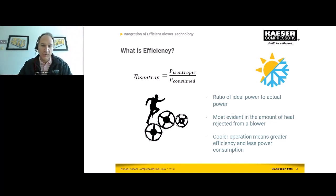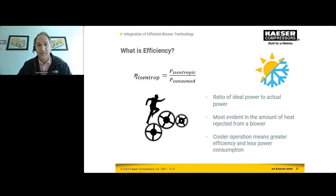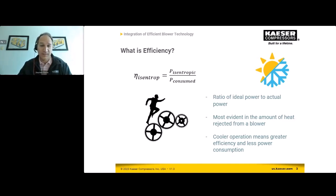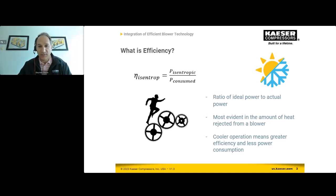A way to bring that home is that inefficiency shows up in heat and the amount of heat being rejected from a blower. A more efficient blower means it runs much cooler. This is beneficial for many reasons: the machine runs cooler mechanically, keeping oil, lubricants, and components cooler; there's reduced heat rejected into the room where the equipment sits; and the discharge air coming out of the blower is cooler, which is better for your process, system, and the wastewater aeration.